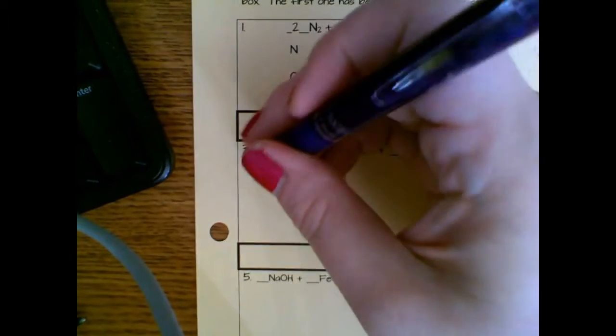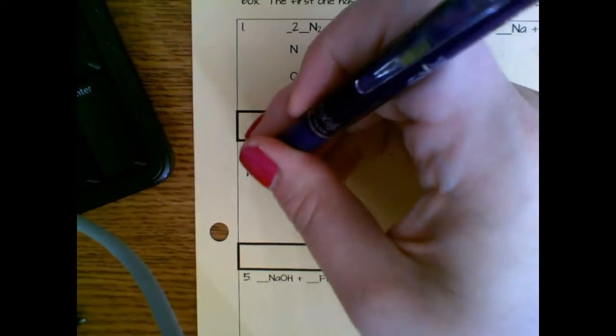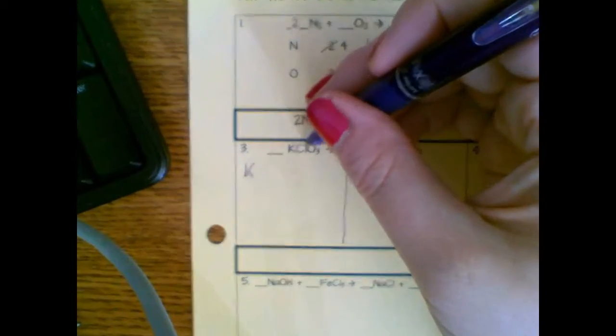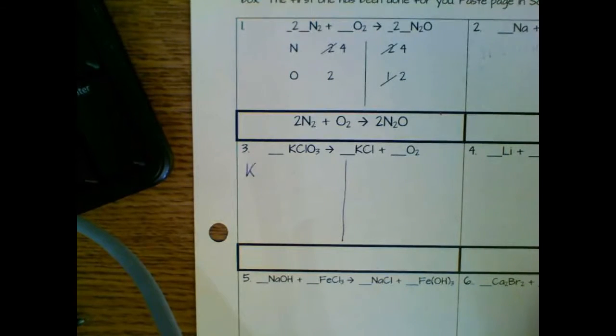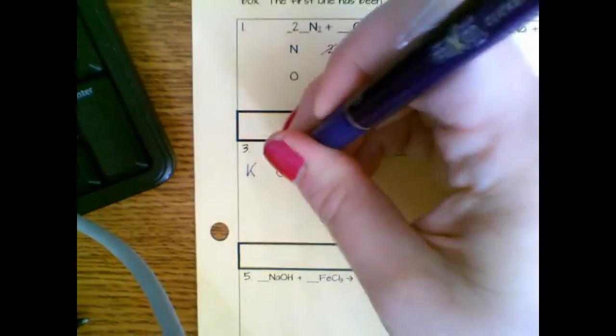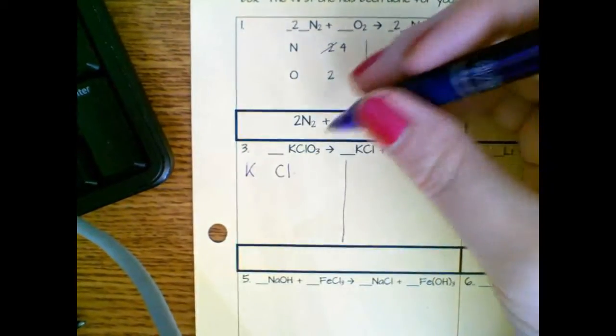So I am first going to write the symbols however many times they appear on either side of the equation. So if I look at this K, I've only got one K. This is a CL. Notice that the L is lowercase. So that means it's not a new element. CL is one element. It is chlorine. So I'm going to write CL and then O.